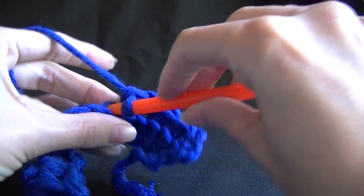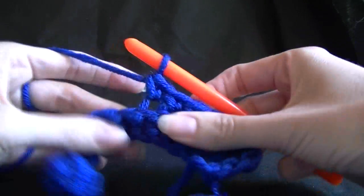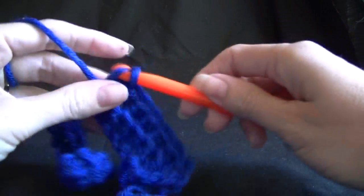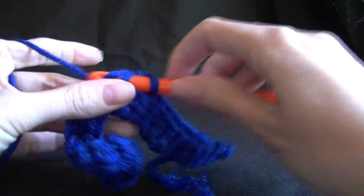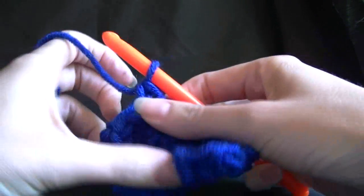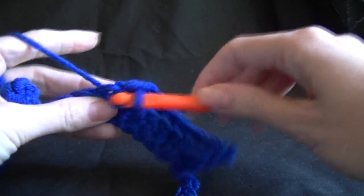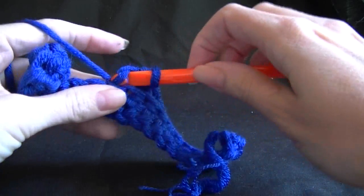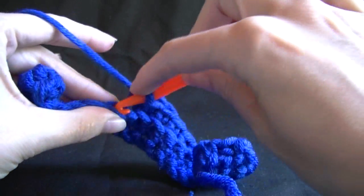And this will change the fabric quite, the way it looks quite a bit. Instead of our fabric looking flat, it is going to give it a rib look, kind of like a crinkle cut chip. So what you want to do is every stitch across, and from now on, in every row, we are going to be working the back loops only.